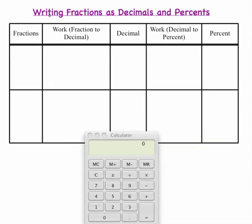To use a calculator, simply take 1 divided by 2, and you will see that the fraction of 1 half equals the decimal 5 tenths, or 0.5.